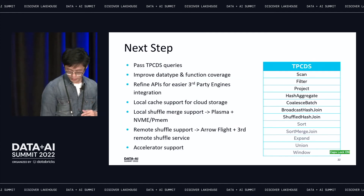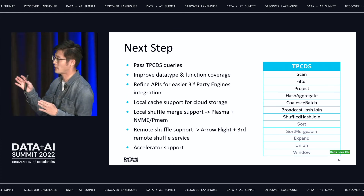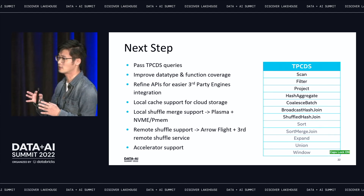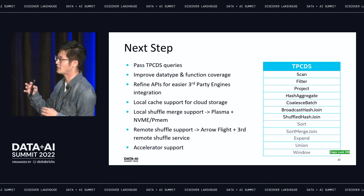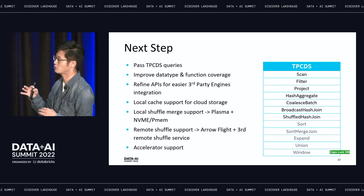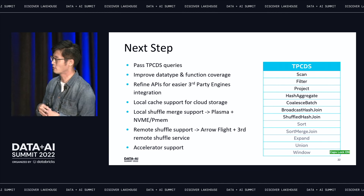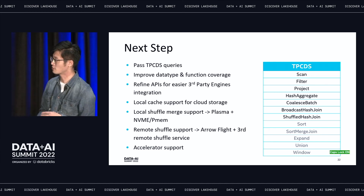For next steps, right now we can run and pass TPC-H queries. The next step is TPC-DS — we are working hard to support some operators and data types that currently cannot be supported. The schedule is that by end of this year, TPC-DS can be supported. There are also a bunch of optimizations we would like to provide in Gluten — listed here as a reference.